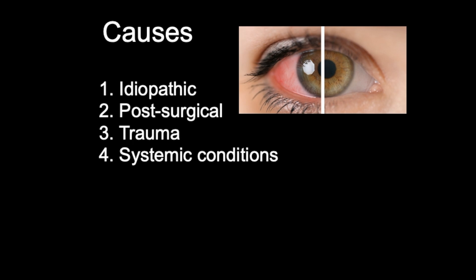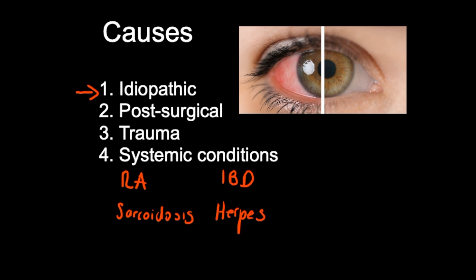In terms of causes of anterior uveitis, the most common cause is idiopathic, meaning no underlying condition can be found. However, it can also be caused by post-surgical issues, trauma, or a foreign body to the eye, and it can be associated with systemic conditions such as rheumatoid arthritis, sarcoidosis, inflammatory bowel disease, herpetic infections such as herpes zoster, herpes simplex, or cytomegalovirus, syphilis, and TB.